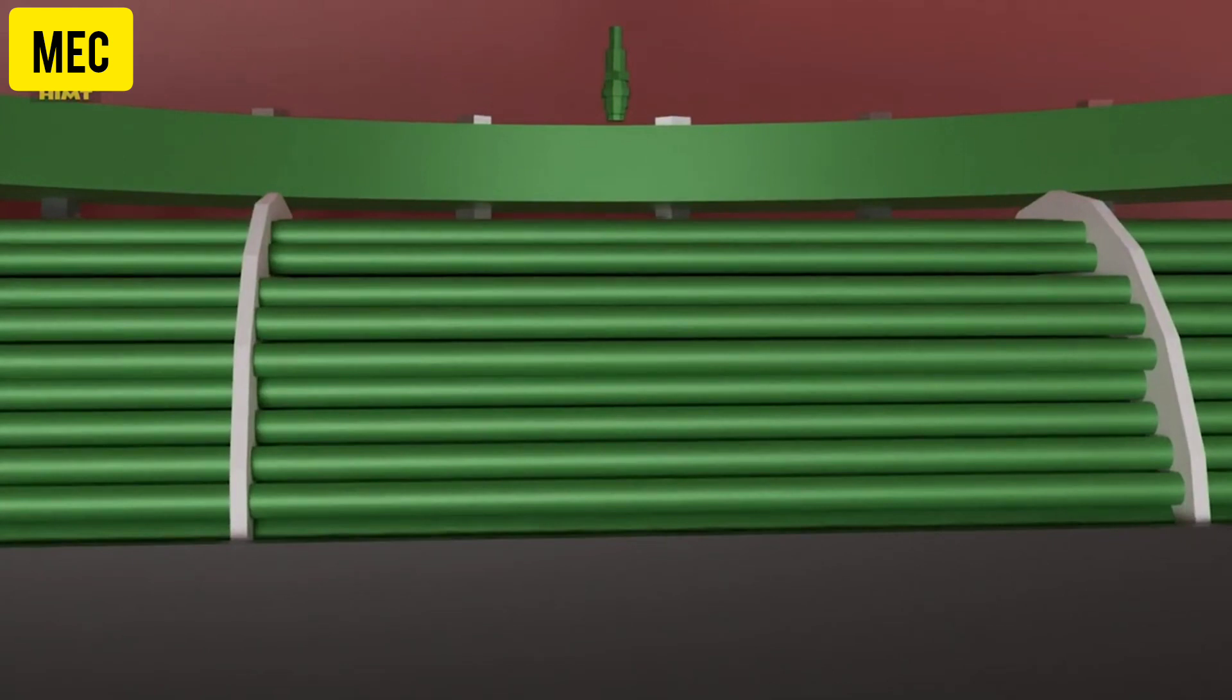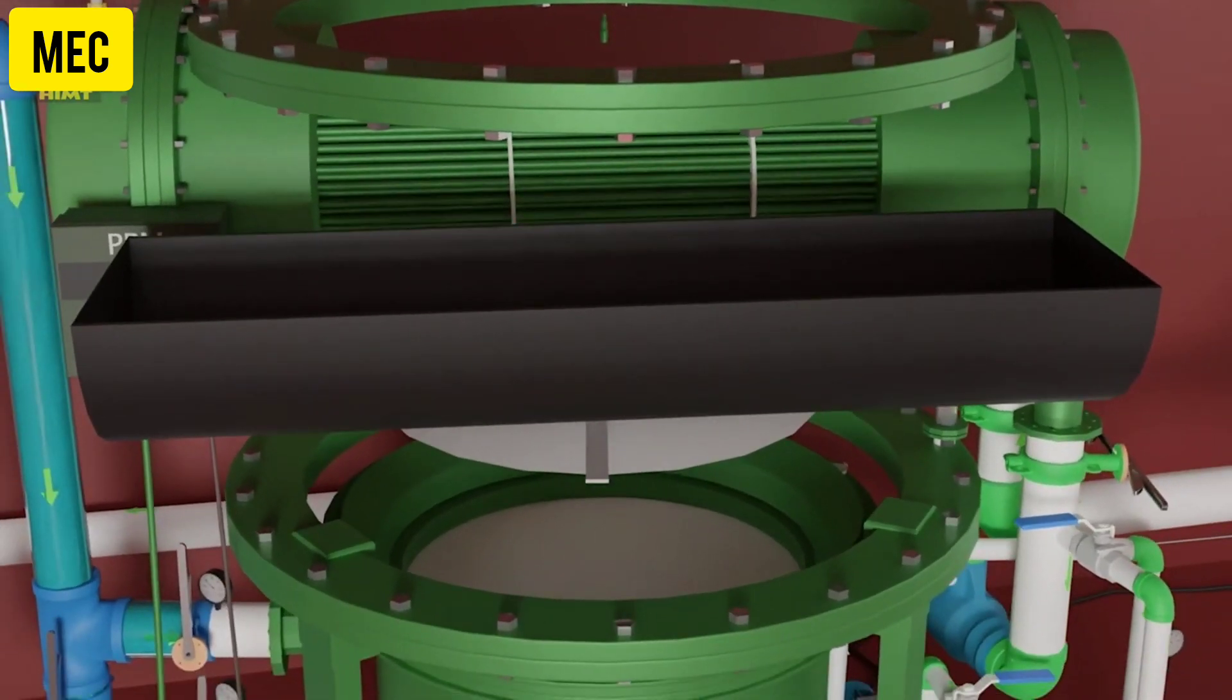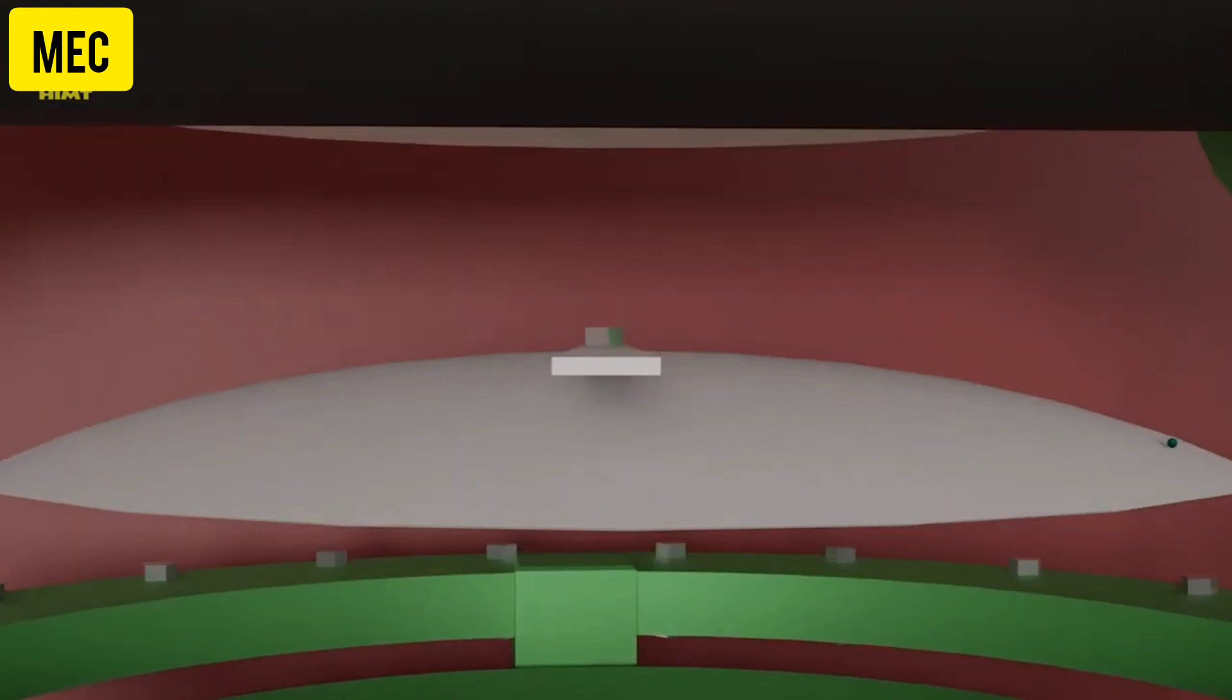This design allows water vapor to come into contact with the outside of the cold tubes, facilitating condensation. Here we have the deflector, which changes the directional flow of the vapor to remove any moisture carried along with it.